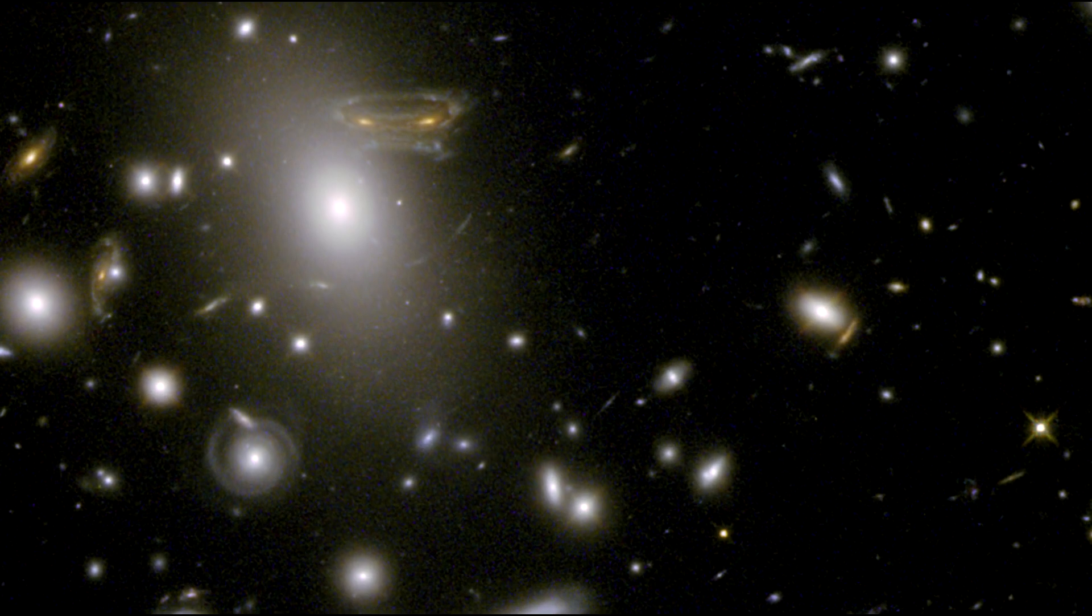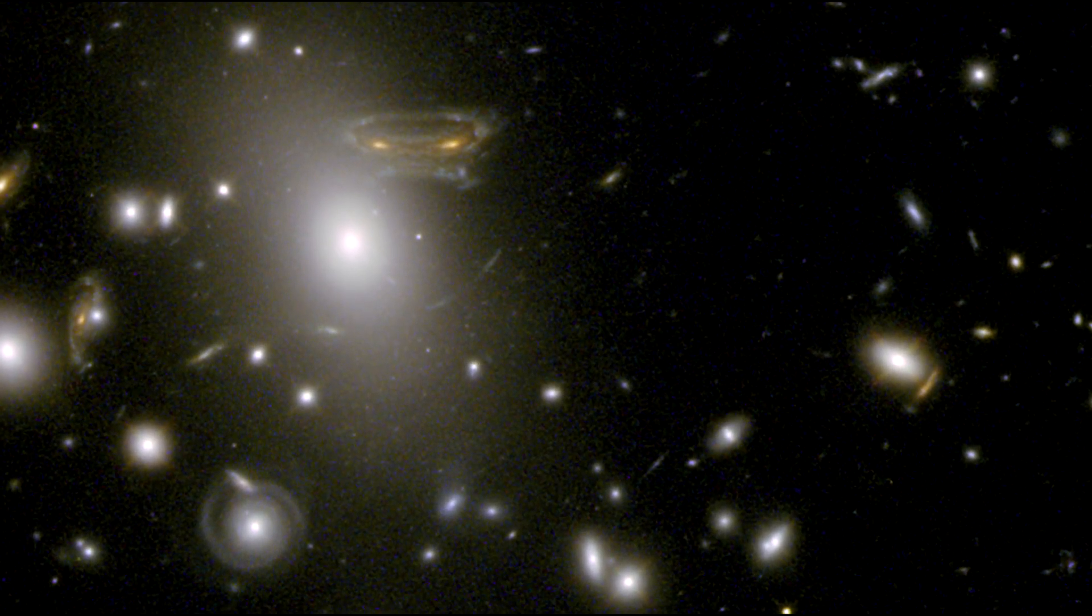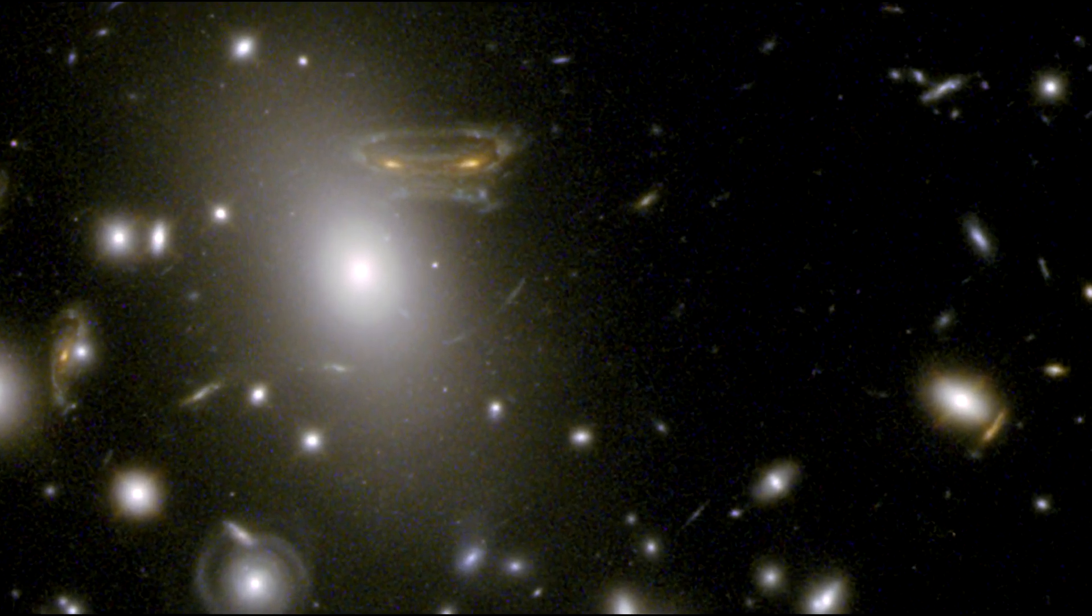In this photo, the galaxy is visible twice because its light followed two separate paths around Abel 68 before reaching us.